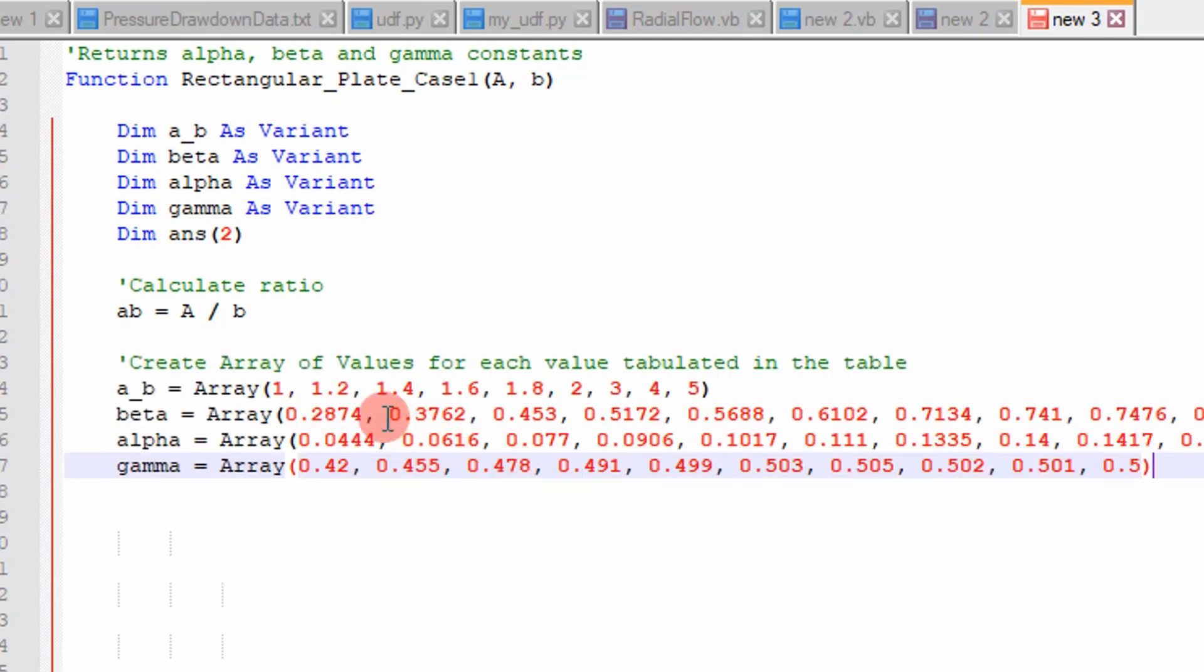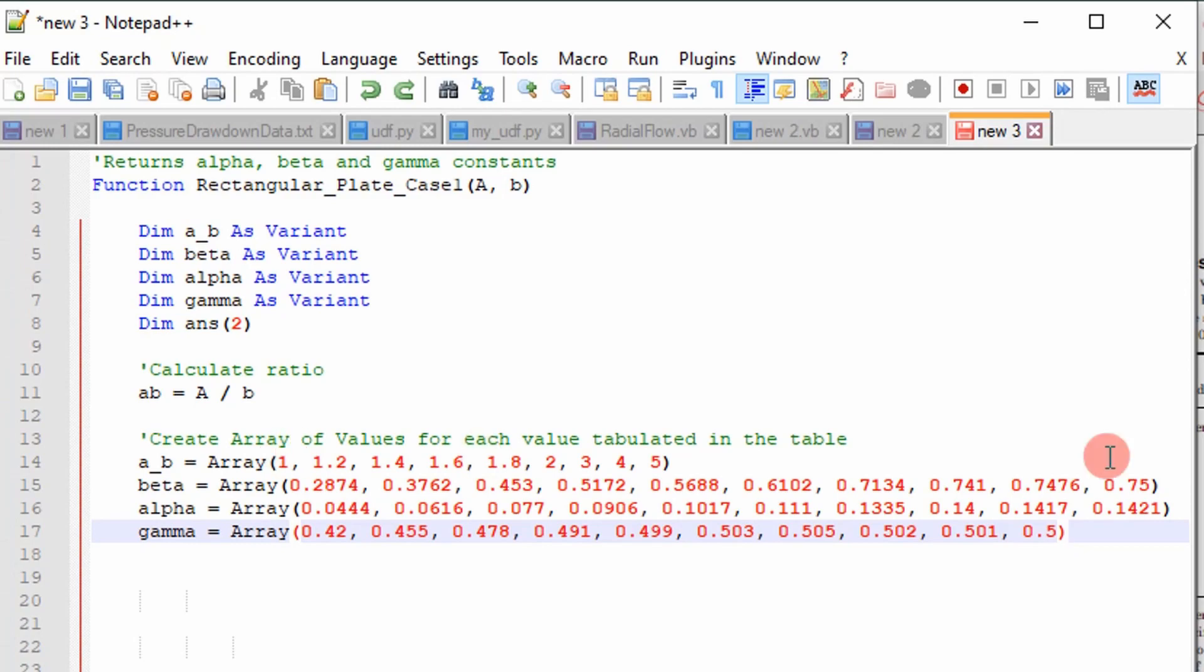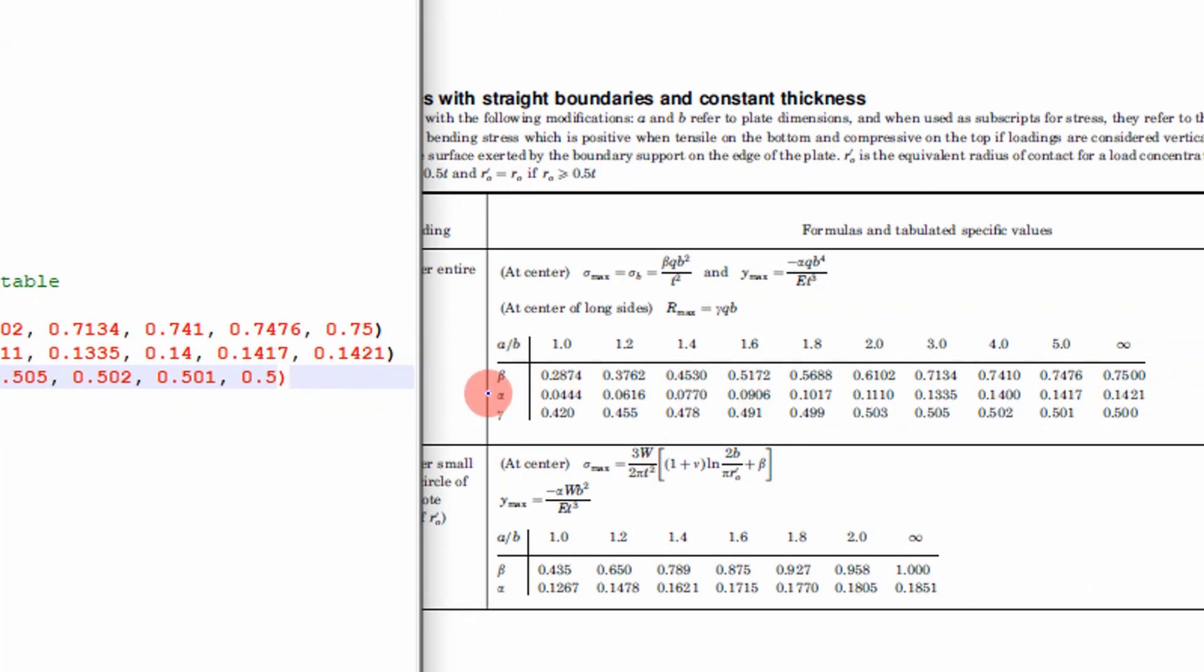The first step I'm going to do is calculate my a over b. And then what I'm going to do is I'm going to fill in my array list for given in the table for a divided by b, that ratio, beta, alpha, and gamma.